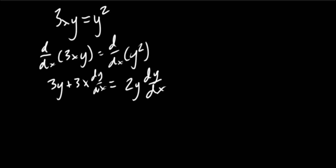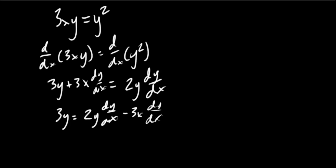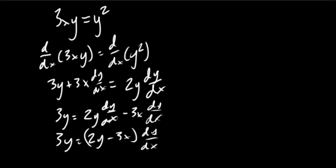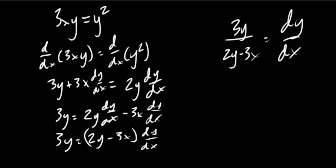Now we can solve for dy/dx. Get all the dy/dx terms on one side by subtracting 3x dy/dx from both sides, giving us 3y equals 2y dy/dx minus 3x dy/dx. Factor dy/dx out of the right side: 3y equals dy/dx times (2y minus 3x). Divide both sides by (2y minus 3x) and our answer is dy/dx equals 3y over (2y minus 3x). And that is how you do implicit differentiation.